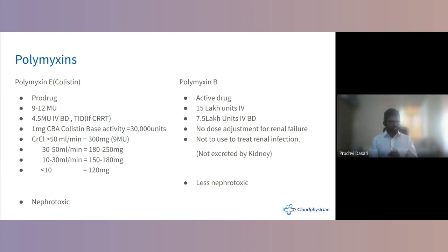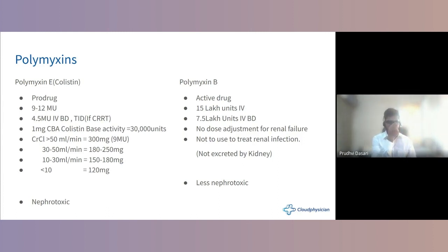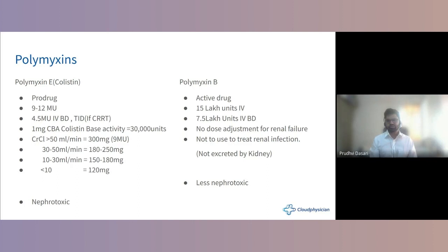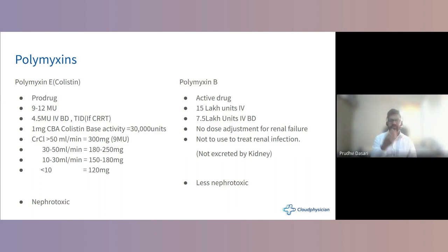Polymyxin B: it is an active drug. Loading dose is 5 million units IV; maintenance dose is 750,000 units IV twice daily. No dose adjustment is required for renal failure. It does not concentrate well in kidneys, so it is not used for urinary tract infections. It is less nephrotoxic than polymyxin E. Colistin acts like a detergent — it creates pores in the cell wall to kill bacteria.